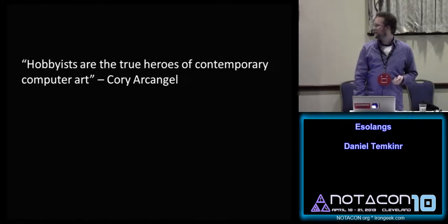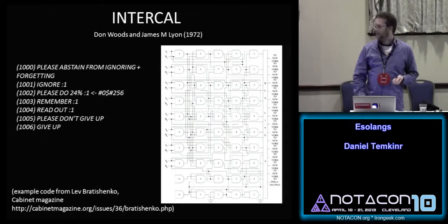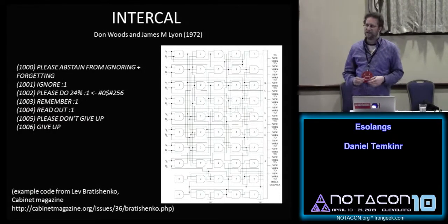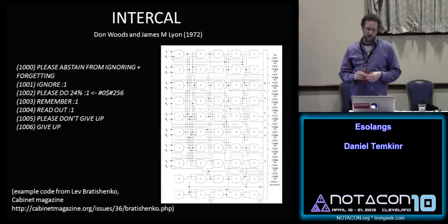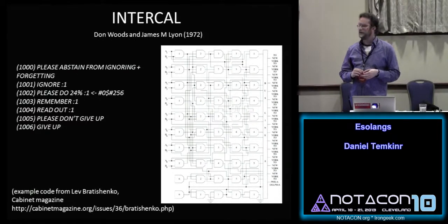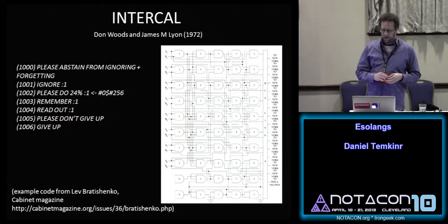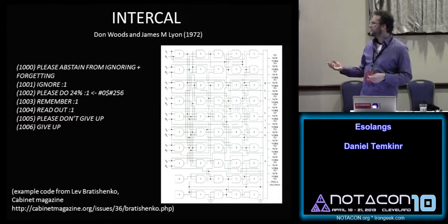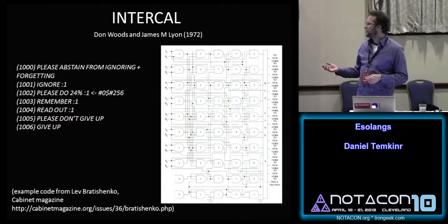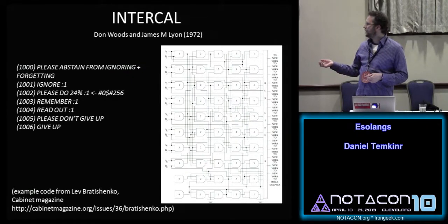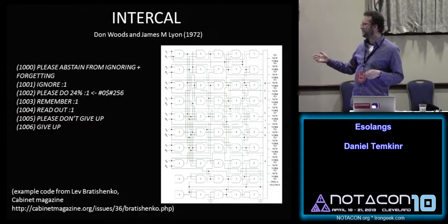The first language generally considered an esolang is INTERCAL, which goes back to 1972. It was created by two bored graduate students working early in the morning, and it was really a parody of languages at the time. It's obviously very unclear and hard to understand. There's a weird thing going on with all the begging — all the pleases. "Please abstain from ignoring." "Please don't ignore this." "Please don't give up."